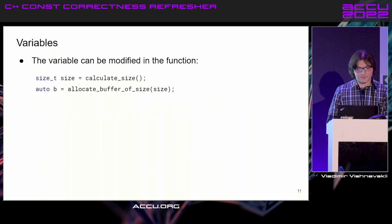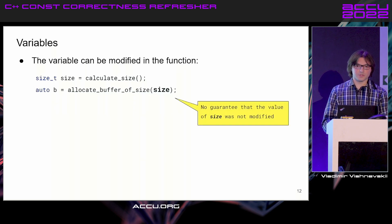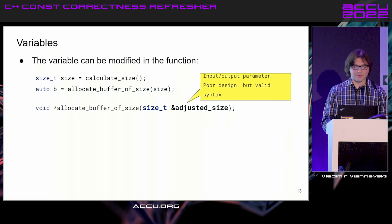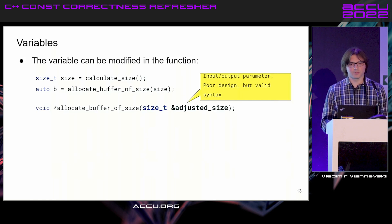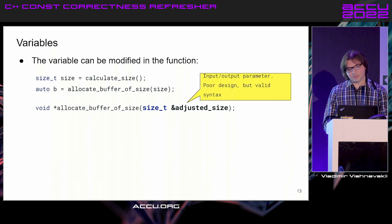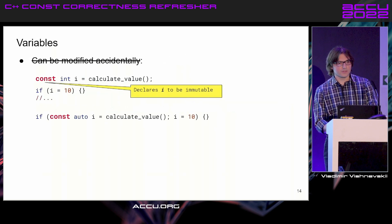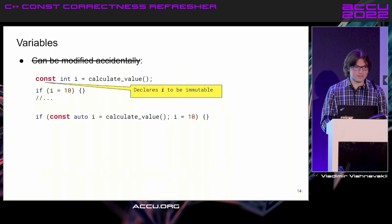Another example: we calculate some size, then call a function — but are we sure the size has the same value after the call? We can become a victim of poor legacy design where an input-output parameter modifies the size, for example adjusting alignment. The portable way to avoid this, regardless of compiler settings, is to declare the variable as immutable — making modification syntactically impossible.